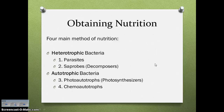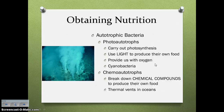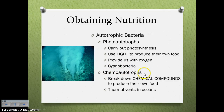Bacteria are either heterotrophic or autotrophic. Heterotrophic bacteria are either parasites — they absorb nutrients from living organisms — or saprobes, which are decomposers that break down decaying organisms for nutrients, just like fungi. Autotrophic bacteria are either photo-autotrophs, which use light to photosynthesize and produce their own food (like cyanobacteria, formerly called blue-green algae), or chemo-autotrophs, which make their own food using chemicals by breaking down chemical compounds. Chemo-autotrophs are found on deep sea vents, where there is no light, so they break down sulfur compounds.